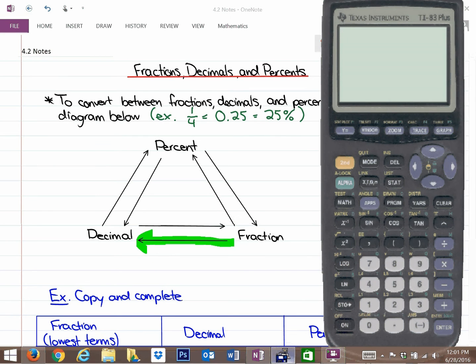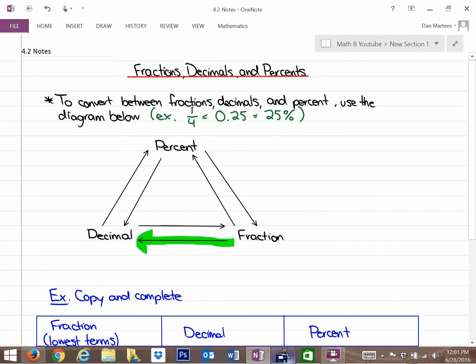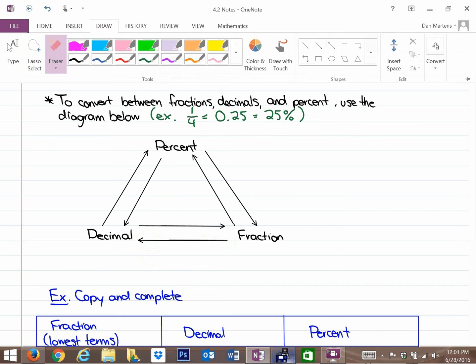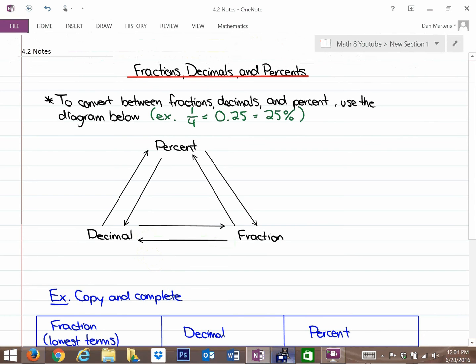So, one quarter, here's an example, so one quarter, if I do one divided by four, that's how I can get 0.25. There are other ways, but I'm going to suggest that that's one of the easier ways to do it. So, from fraction to decimal, you divide the fraction, and you're going to do that on your calculator. So, that's how we do that.